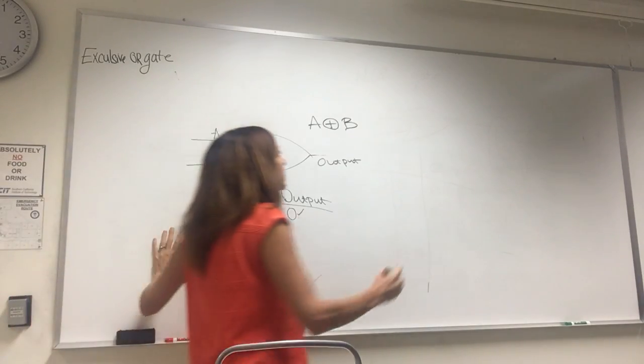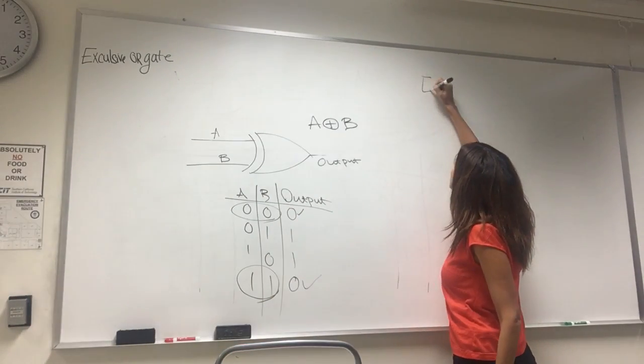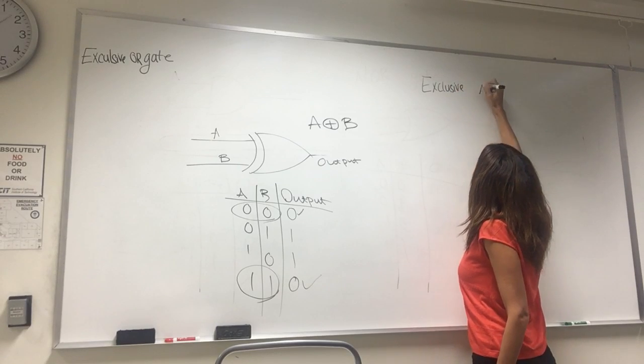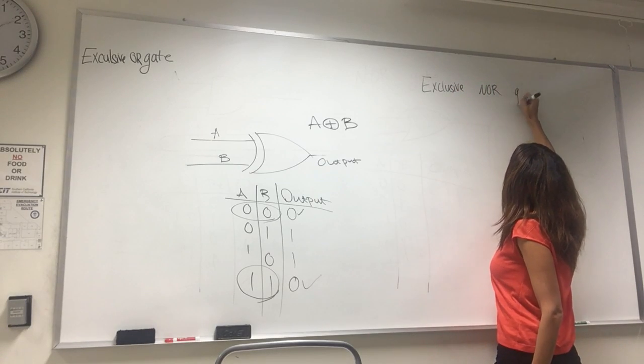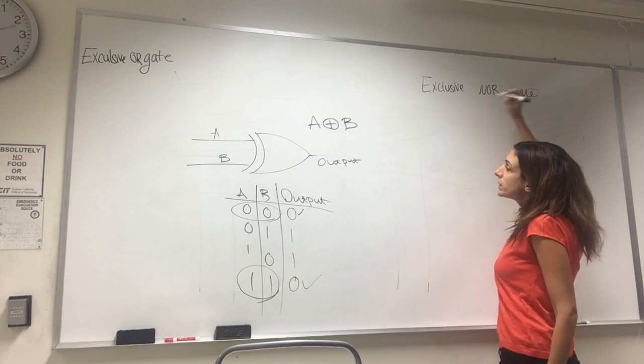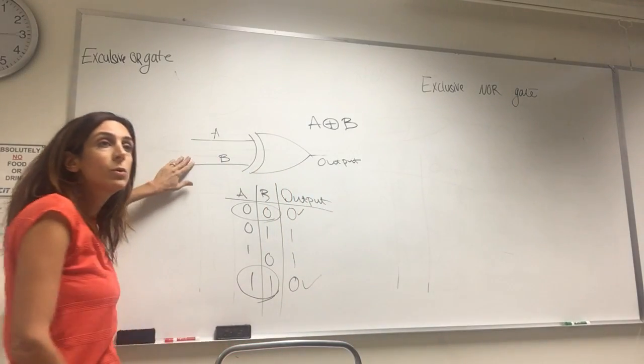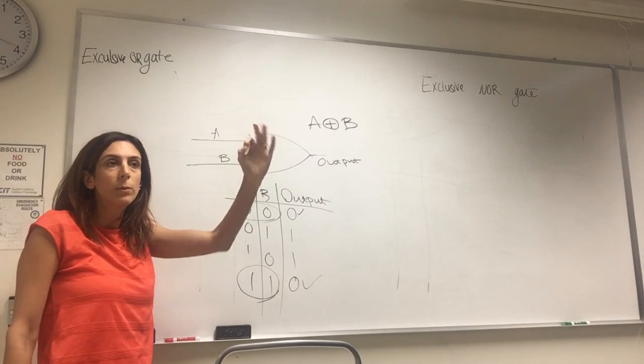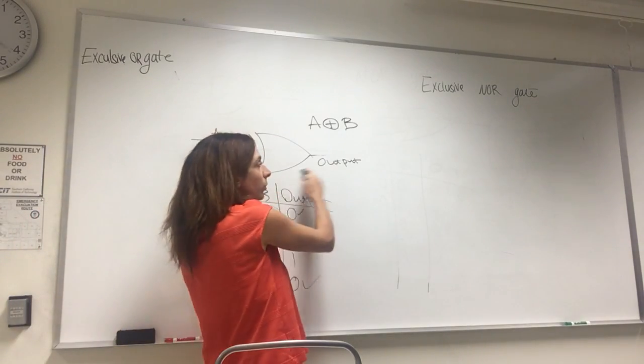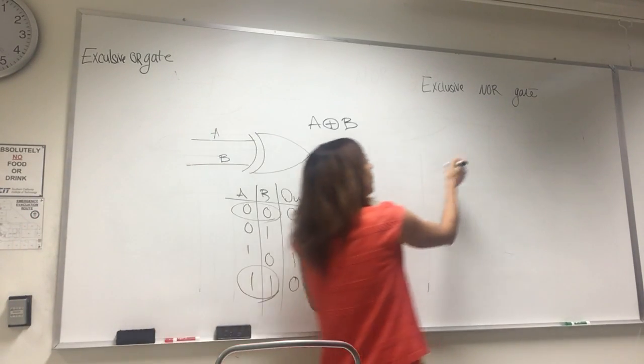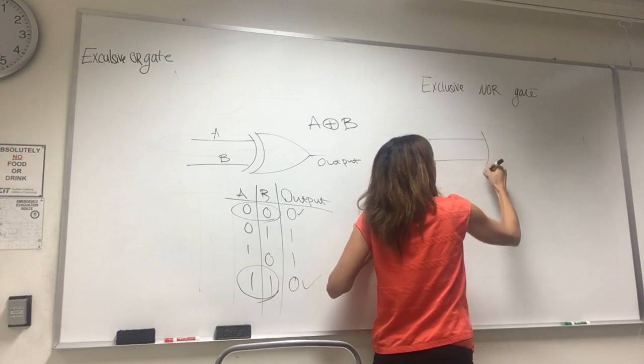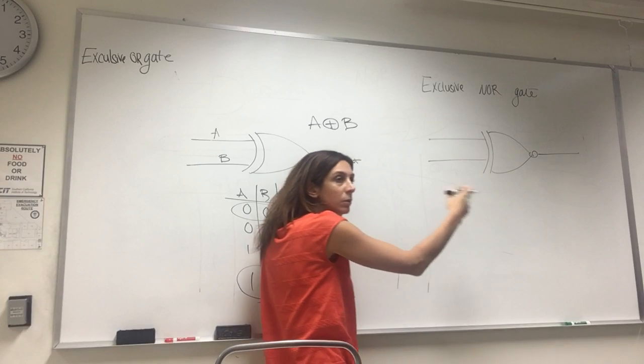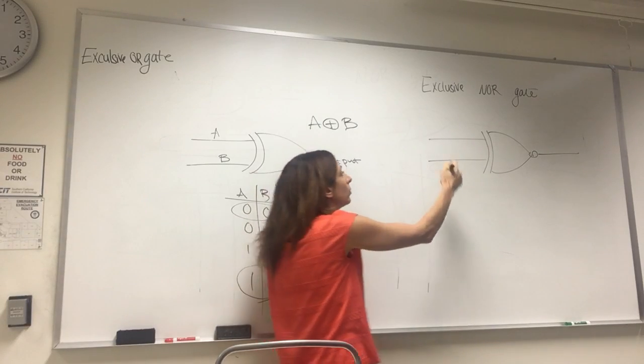What is the Boolean expression for exclusive OR? A plus with a circle around it. Yeah. Okay. And the last gate is exclusive NOR. Which is OR. Basically, how do you, if this is a symbol for exclusive OR, what is the symbol for exclusive NOR? You just put a bubble. For the symbol. For the symbol, you just put, if I put a bubble here, that means it's exclusive NOR. Because this is OR, that's NOR.